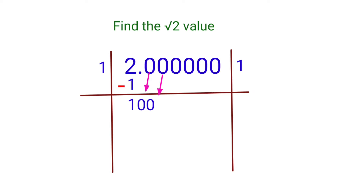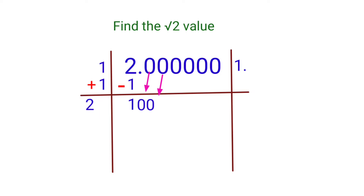Since there is a dot after 2 in the original number, we place a dot in the quotient after 1. Now write 1+1 and add them to get 2. We now think: with which number appended to 2, can we multiply that combined number by the same digit to get a product less than or equal to 100?